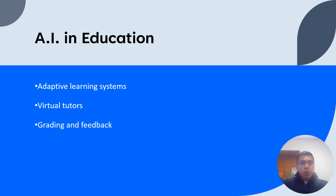The second is virtual tutors. AI-driven tutoring systems can provide personalized one-on-one instruction to students, offering guidance, support, and feedback in real time. These virtual tutors can answer questions, explain concepts, and assist with problem solving, making learning more accessible and engaging. The third is grading and feedback. AI can streamline the grading process by automating tasks such as multiple choice grading, essay scoring, and even providing personalized feedback on student work. This can save teachers time and effort, allowing them to focus on more critical aspects of instruction and student support.